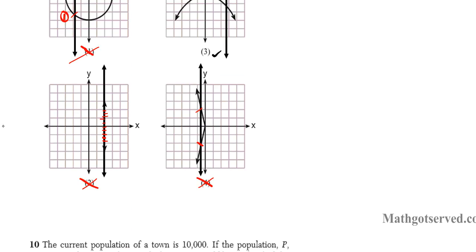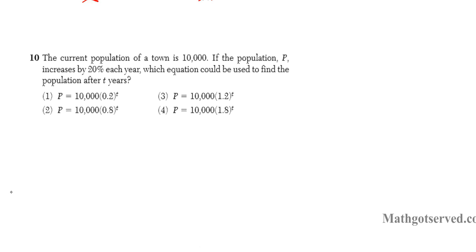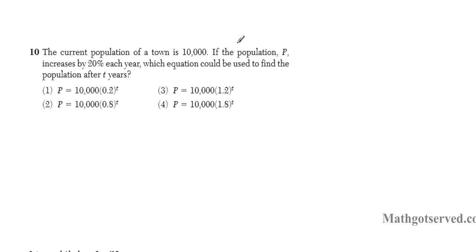Now let's move on to question number 10. It says the current population of a town is 10,000. If the population increases by 20% each year, which equation could be used to find the population after t years? To write an expression that represents the population after t years, we need to remember our population growth formula.